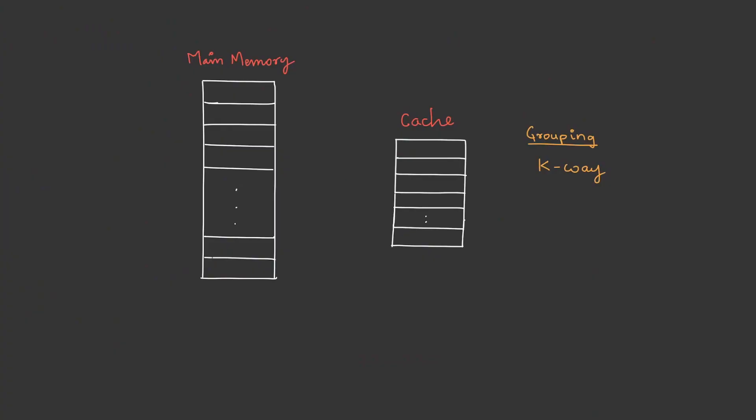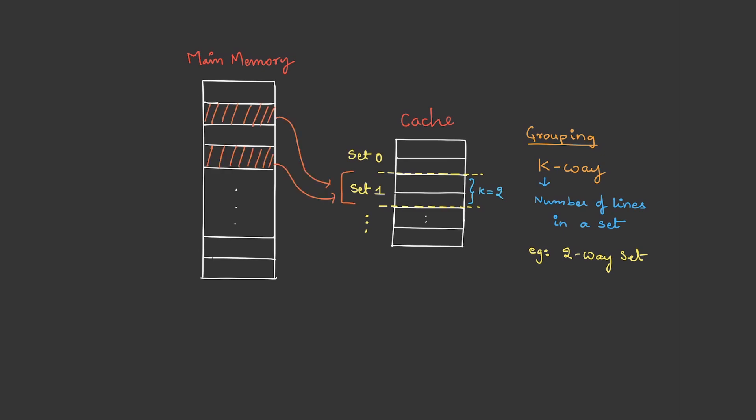In associative mapping, search is an overhead. To overcome that, we have the third mapping technique: set associative mapping. Here we group the cache lines, and the grouping is done in k-way, where k is the number of lines in a set. For example, let's take k as 2, then we need to segregate the cache into sets each of size 2. In this mapping, memory blocks are connected to a set using the logic of direct mapping.